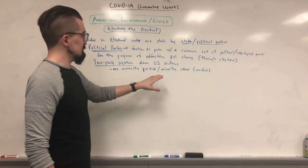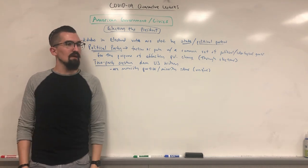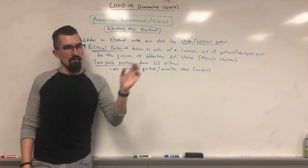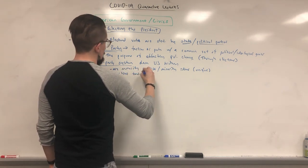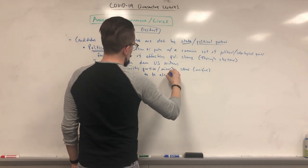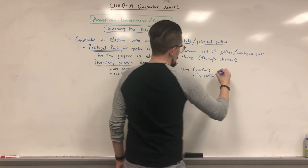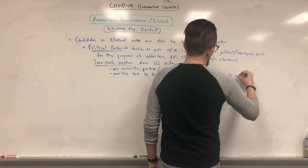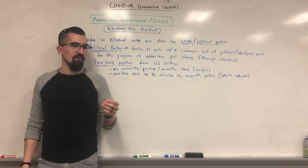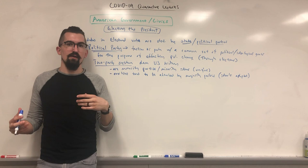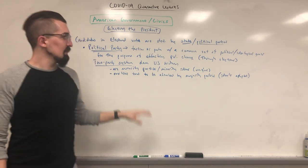Minority parties exist and have their own ideals, but usually they realize there's no point fielding candidates because it's just going to go Democrat or Republican. So what they do is try to mold their beliefs and merge with either the Democrats or the Republicans — they tend to be absorbed by majority parties, and their ideals are adopted. Over time, the Republicans or Democrats will see that a minority party has a significant following, adopt some of their ideals, and the minority party members end up registering as Democrats or Republicans.